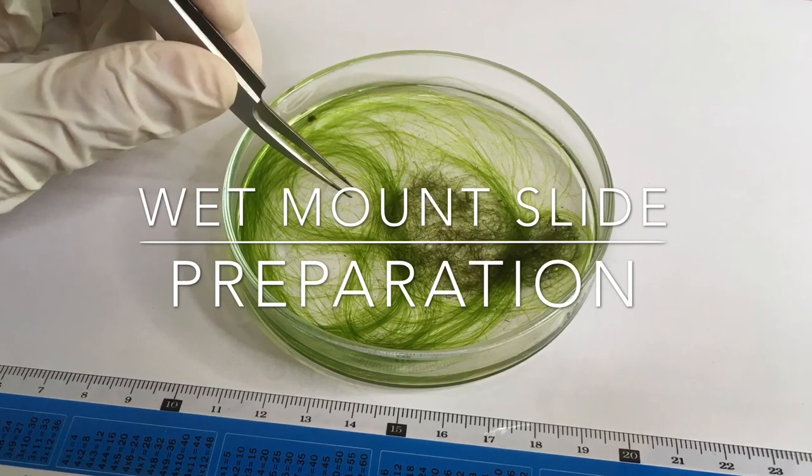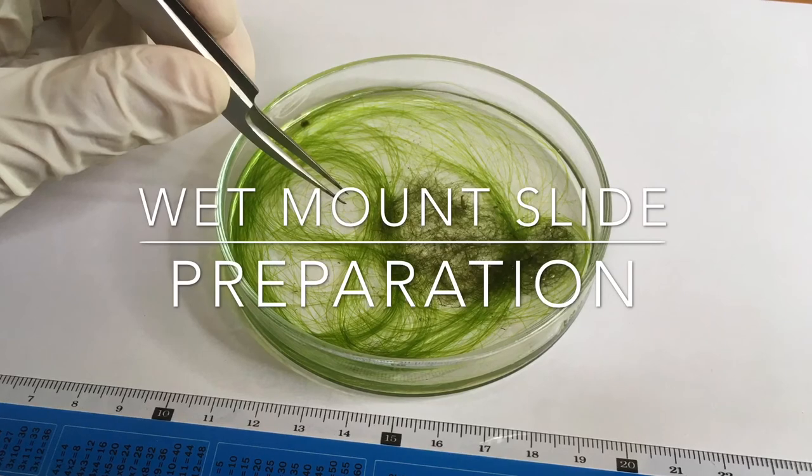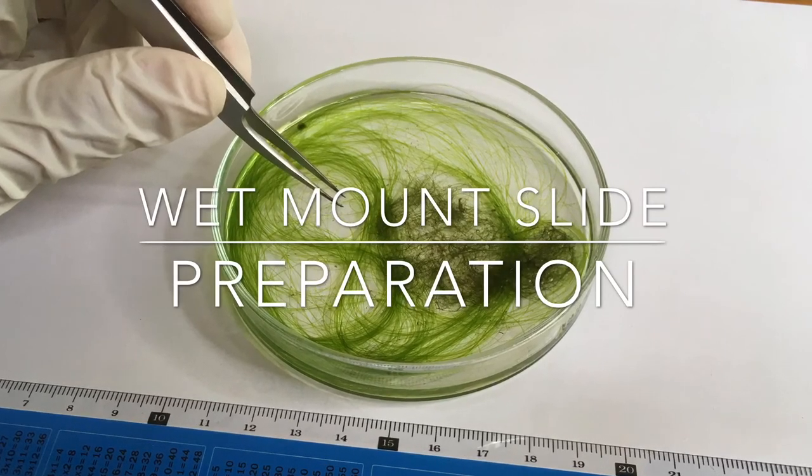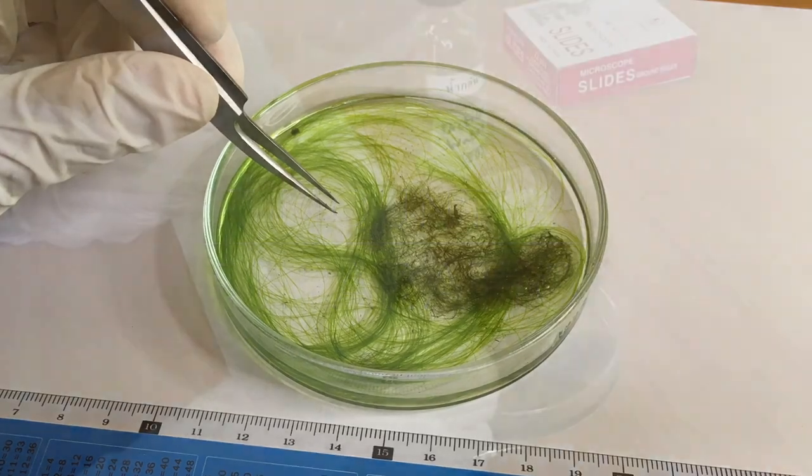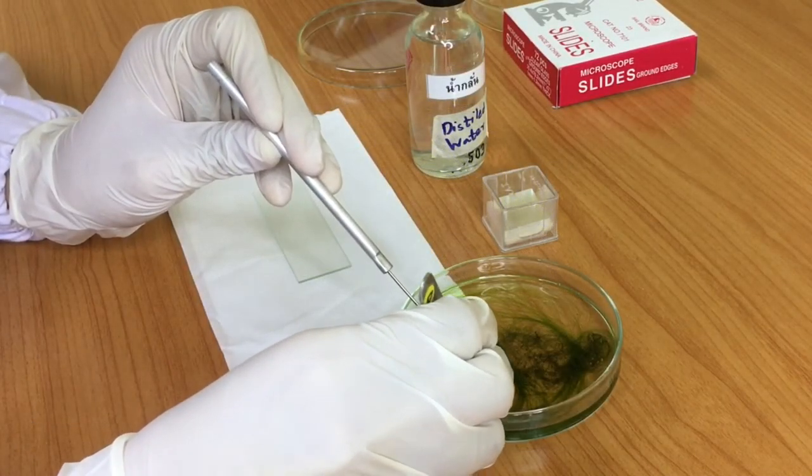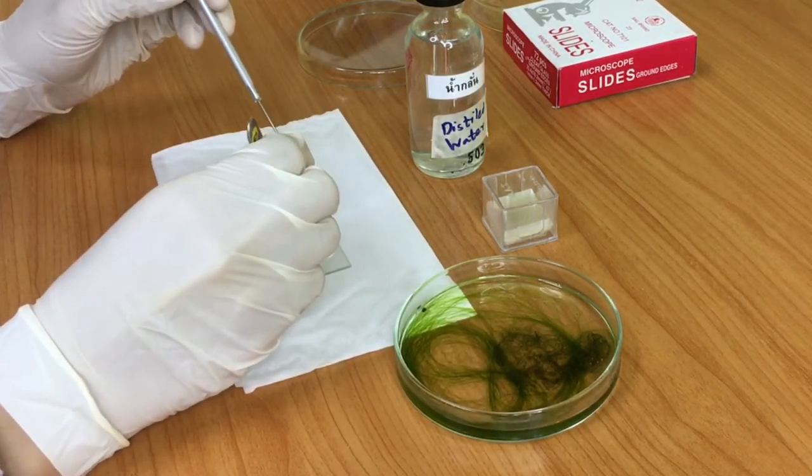A wet mount slide is a temporary slide of a specimen. The specimen slide is prepared using small amount of water to hold the specimen under a cover slip. We will explain steps to make the wet mount slide.